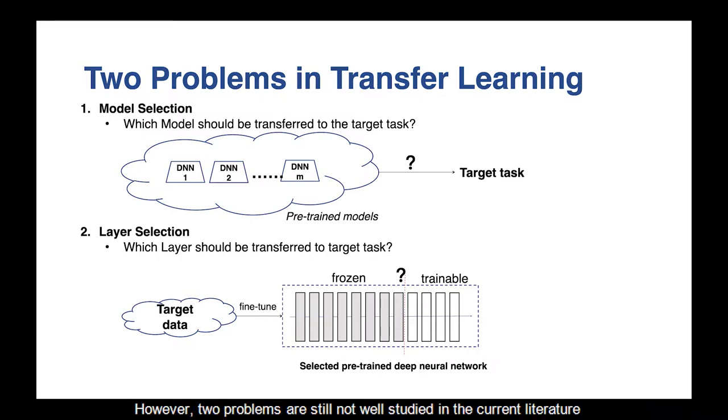However, two problems are still not well studied in current literature. Firstly, given a large number of pre-trained models, which one should be reused to benefit the current task most? Secondly, with the pre-trained models, which layers should be fixed or fine-tuned to produce highest performance?